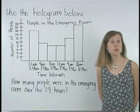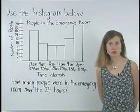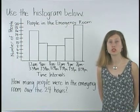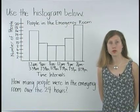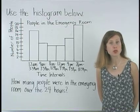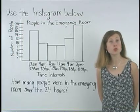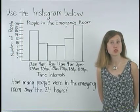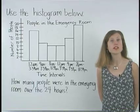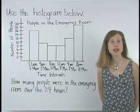To determine how many people were in the emergency room over the course of the 24 hours, simply find the number of people who were in the emergency room during each time interval and add.